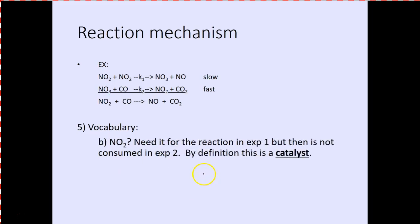Next: catalyst. NO2 is needed for the reaction in step one, but is not consumed in step two. By definition, this is a catalyst. One of the NO2 molecules is considered a catalyst because it occurs again. You need it for the reaction in step one, but it's not a reactant in the second step — that is officially a catalyst.